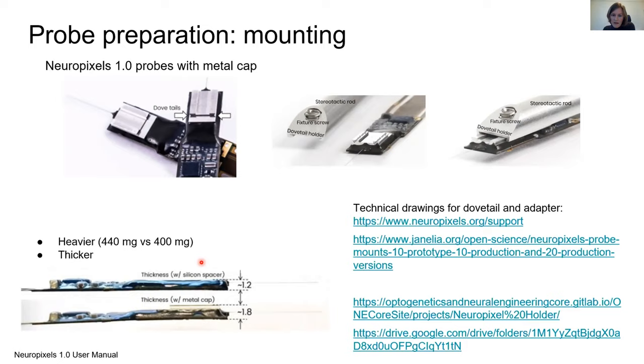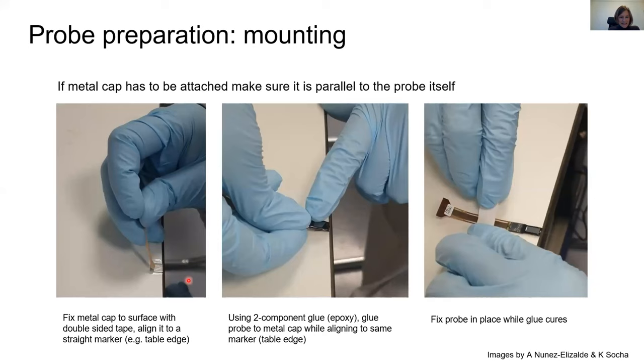So how do you actually mount the probe? Here is shown how you actually put this metal cap or the dovetail onto the probe in case you bought the ones without or you have an older version. The most important thing to remember is that you need to attach the dovetail so that it is parallel to the probe itself. Otherwise, the probe will not go into the brain straight. You can, for example, attach the metal cap onto a surface with a double sided tape and align this to a marker, for example the edge of this table. Then you glue with a two component glue, you glue the probe to this cap and align it to the same marker.